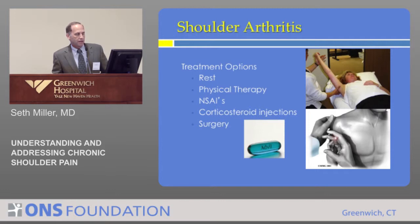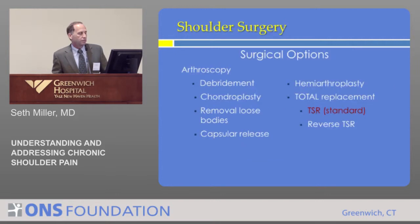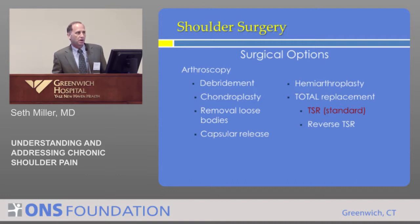Anti-inflammatory medications are definitely helpful, particularly earlier on. Then we can go to injections of a steroid, which is another anti-inflammatory medication. Eventually, if it gets bad enough, we move into surgical options. Within the surgical options, there are less invasive arthroscopic procedures where we clean up the joint — called a debridement — smooth the cartilage (chondroplasty), remove any loose pieces, and if the joint is very stiff, release some of the contracted capsular tissues to improve range of motion. This can be helpful for mild to moderate arthritis.